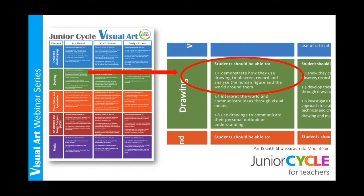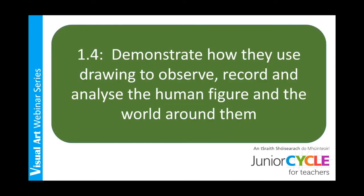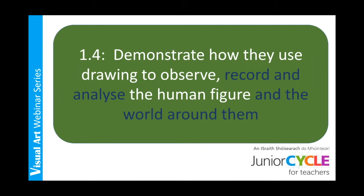If we move to the strand of art and the element of drawing, we can see learning outcome 1.4, which is a learning outcome that will be developed again and again rather than achieved in one body of work. This is because the learning outcomes are for three years. Therefore, the learning outcomes focused on at a point in time will not have been completed or ticked off, but will continue to support the students over the three years of junior cycle and beyond. For example, for first years I might decide to focus on learning outcome 1.4 and demonstrate how they use drawing to observe the human figure, which can be revisited many times throughout the year.